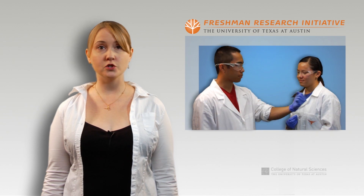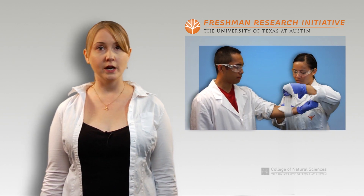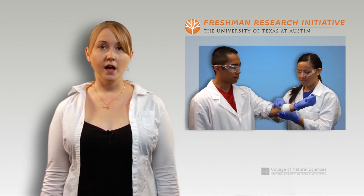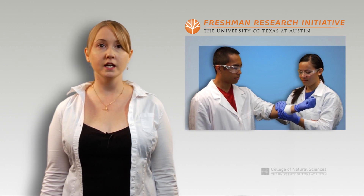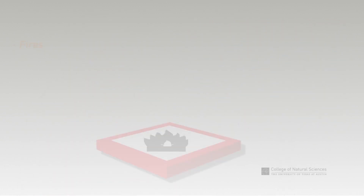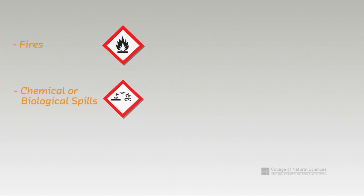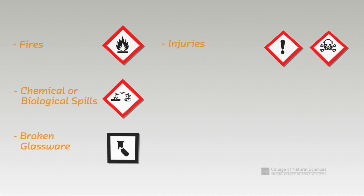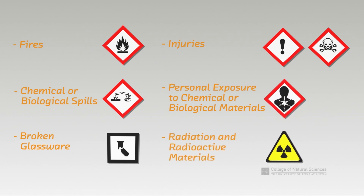In this video, we will demonstrate the proper way to respond in a variety of situations, ranging from minor incidents to emergencies. Examples of the types of emergencies or accidents that you may encounter in the lab include fires, chemical or biological spills, broken glassware, injuries, personal exposure to chemical or biological materials, and radiation and radioactive materials.